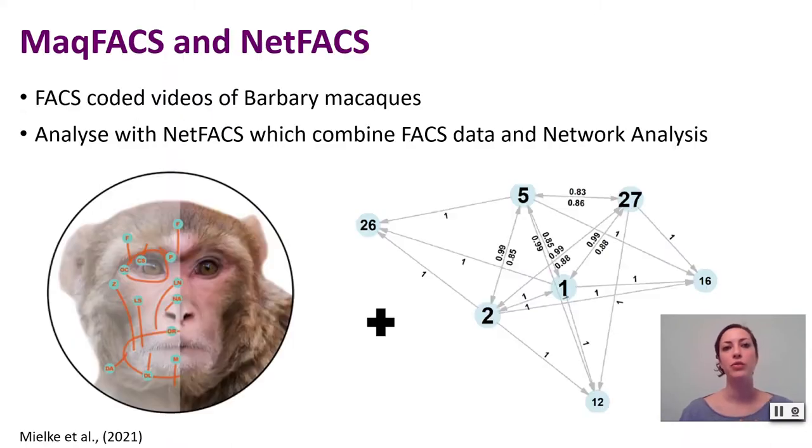FACS produces very rich data sets, but these have some features that don't fit well with traditional statistical models, which prevent from defining and quantifying complexity. Standardized methods of network science are one way to overcome these issues. Netfax is the statistical package that my colleagues developed that combines FACS data and network analysis, where FACS is conceptualized as a network of interconnected action units. Netfax is based on probability of occurrence, permutations, and bootstrapping.